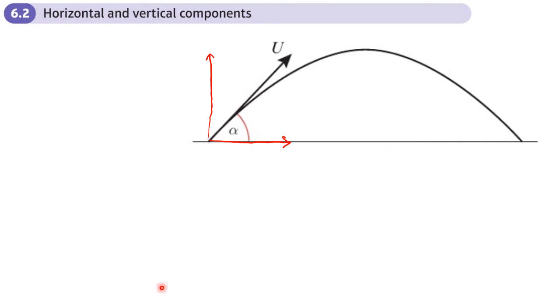From stuff we've done before, this bit here at the bottom is going to be u cos α. So u cos α is going to be the horizontal component.